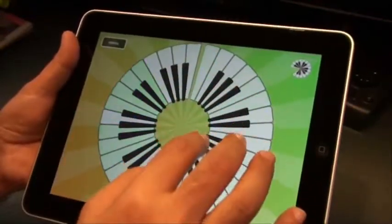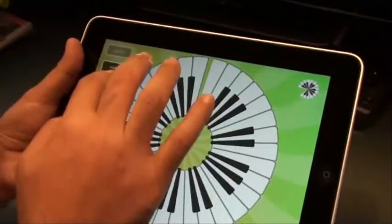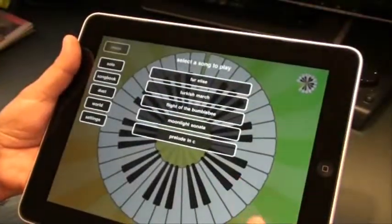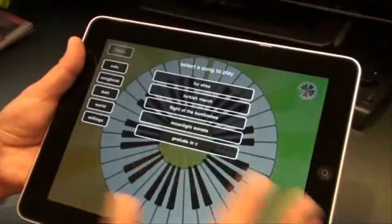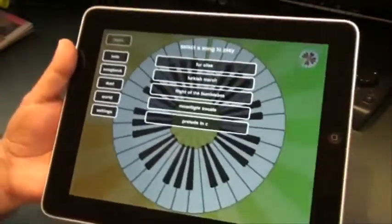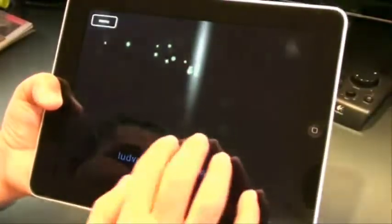And these are two different formats. This is the freestyle, but you can change that. Let's go to the songbook mode where you will have about four or five pre-loaded notes or music, and you can play like a professional piano player now.